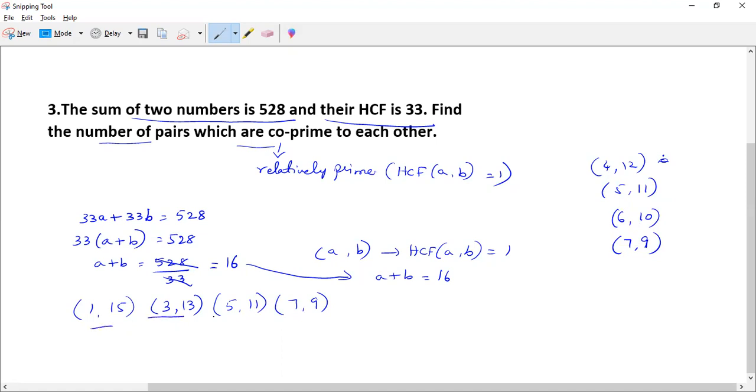So these are relatively prime - they are co-prime to each other. Therefore, the number of pairs which are co-prime to each other are equal to 4. Thank you.